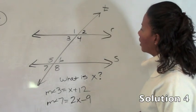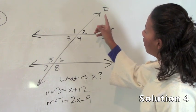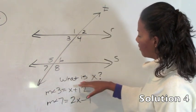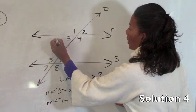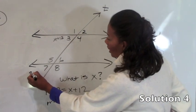Number 4 shows us two lines that appear to be parallel and they are cut by the transversal T. We are asked for the value of x given that the measure of angle 1 is 98 degrees, the measure of angle 3 is x plus 12, and the measure of angle 7 is 2x minus 9.